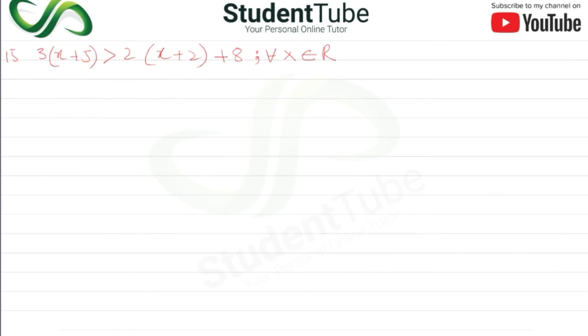Okay, let's do the next question, question number 15. Question number 15 is 3(x + 5) > 2(x + 2) + 8.